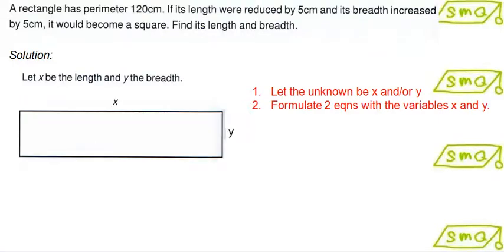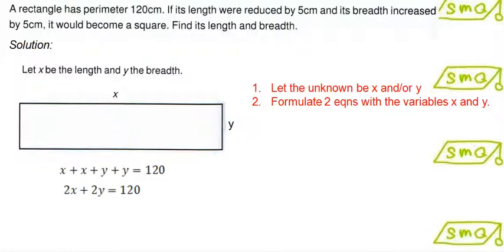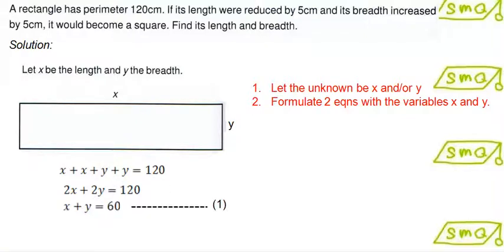Next, we have to formulate two equations with the variables x and y. From the given information, I can formulate two equations. One of them is x plus x plus y plus y equals to 120, which is the perimeter. Simplifying this equation, I get x plus y equals to 60. This is my first equation.